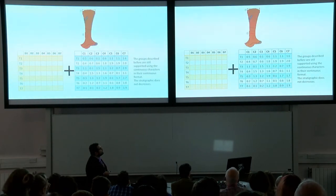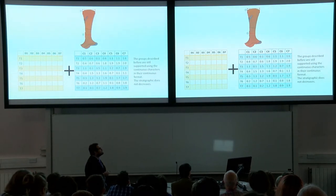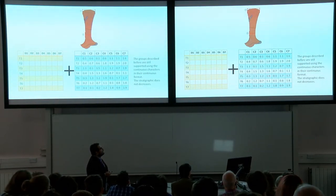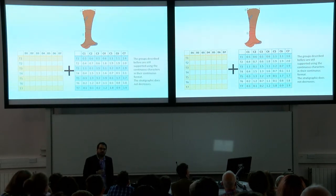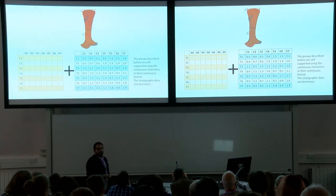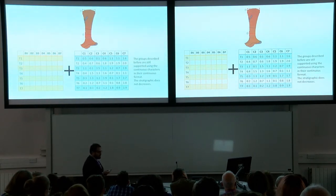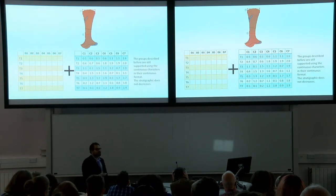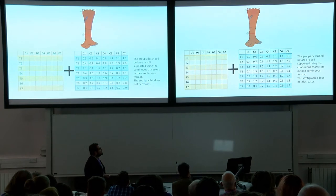When you use the continuous characters as such — as continuous measurements or continuous data — the overall topology of 927 characters doesn't get affected, and the stratigraphic fit neither reduces nor increases. So the noise they could be introducing is not as much as with the other techniques of discretizing characters.